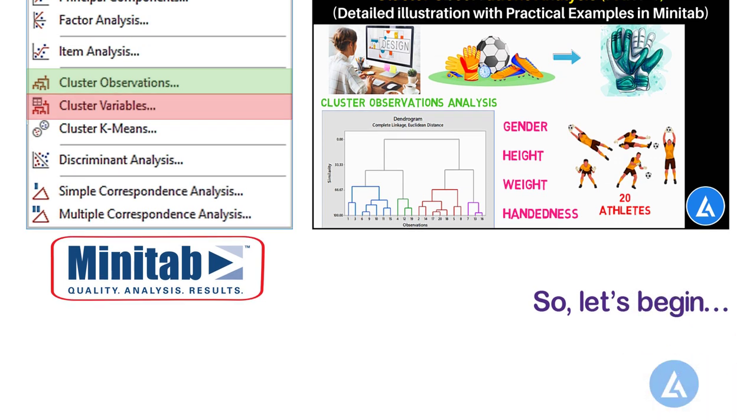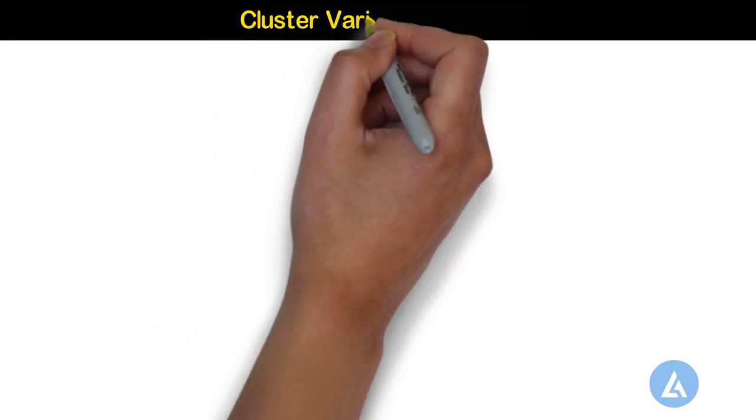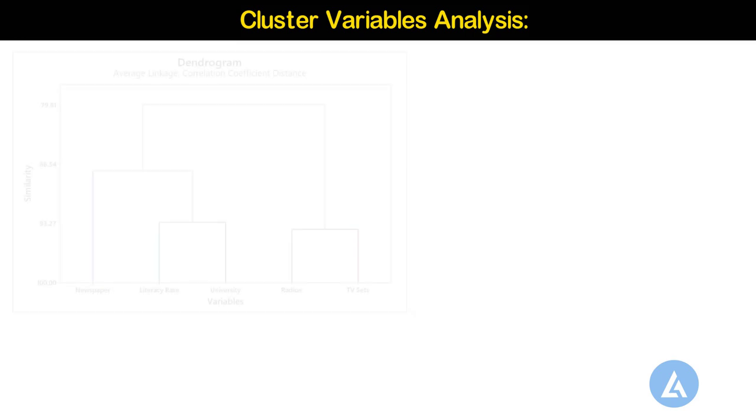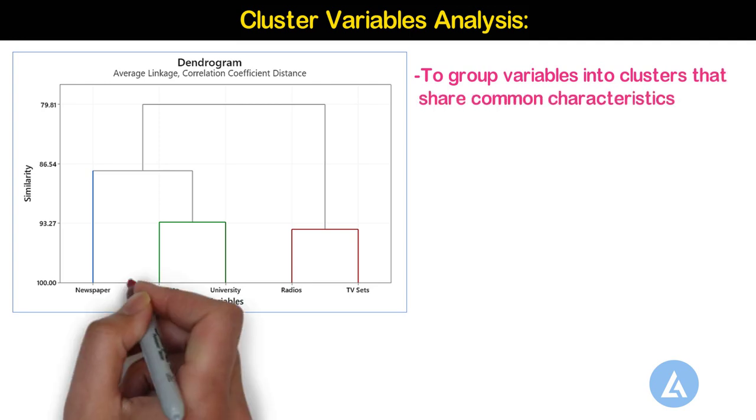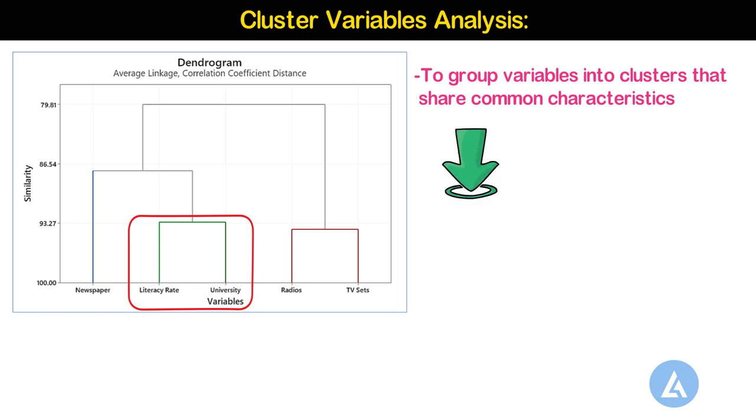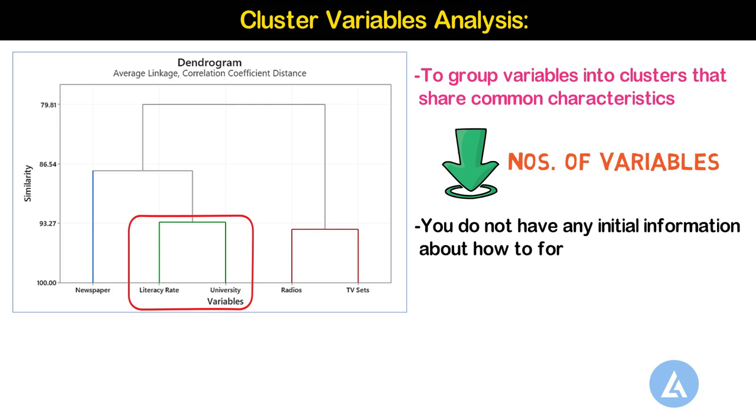So, let's begin. Cluster variables analysis. The cluster variables analysis is used to group variables into clusters that share common characteristics. Clustering variables allows you to reduce the number of variables for analysis. Similar to cluster observations, this analysis is also appropriate when you do not have any initial information about how to form the groups.